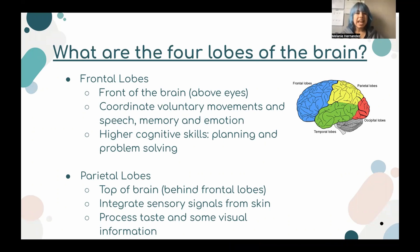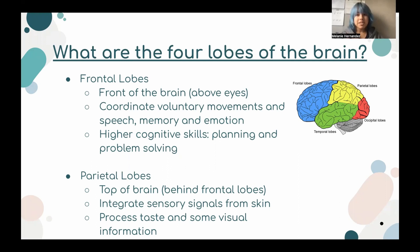It is the last part of the brain to mature. The parietal lobe is located on the top of our brain and is behind the frontal lobe. It helps integrate sensory signals from the skin, including touch, temperature, pressure, and pain. It also helps process taste and some visual information.